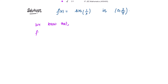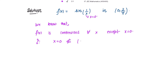We know that f(x) is continuous for all x except x = 0, where the function is not defined. Also, x = 0 does not belong to the open interval (0, 2/π) given to us. Therefore, f(x) is continuous in this open interval for all points.